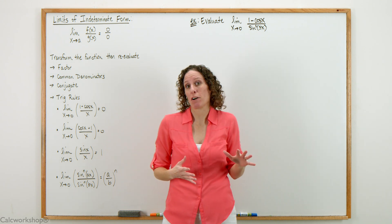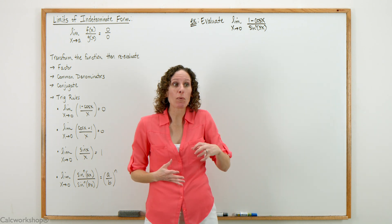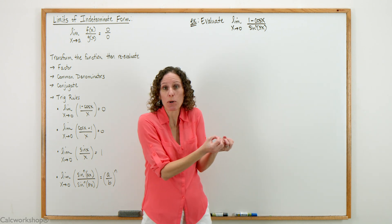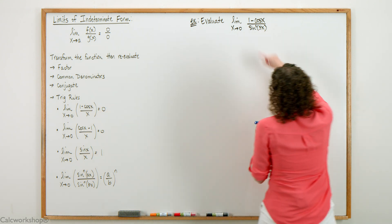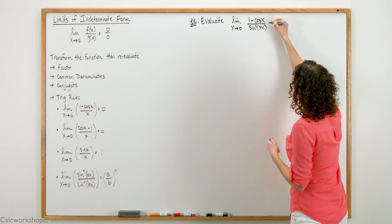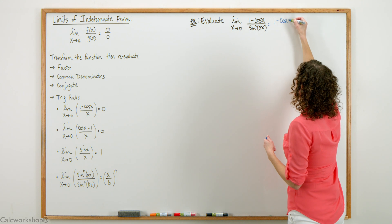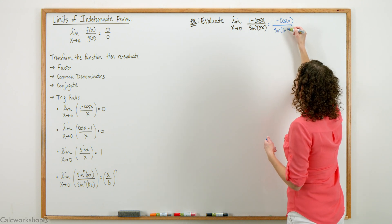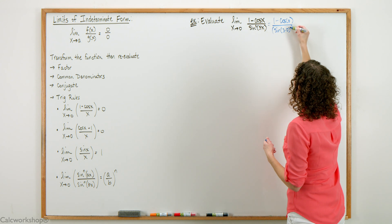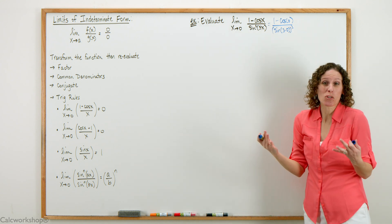Whenever we see a limit function we want to evaluate by plugging in the value that x is approaching to see if we get a valid answer. When we plug in 0, we get 1 minus the cosine of 0 divided by sine of 3 times 0 all quantity squared.